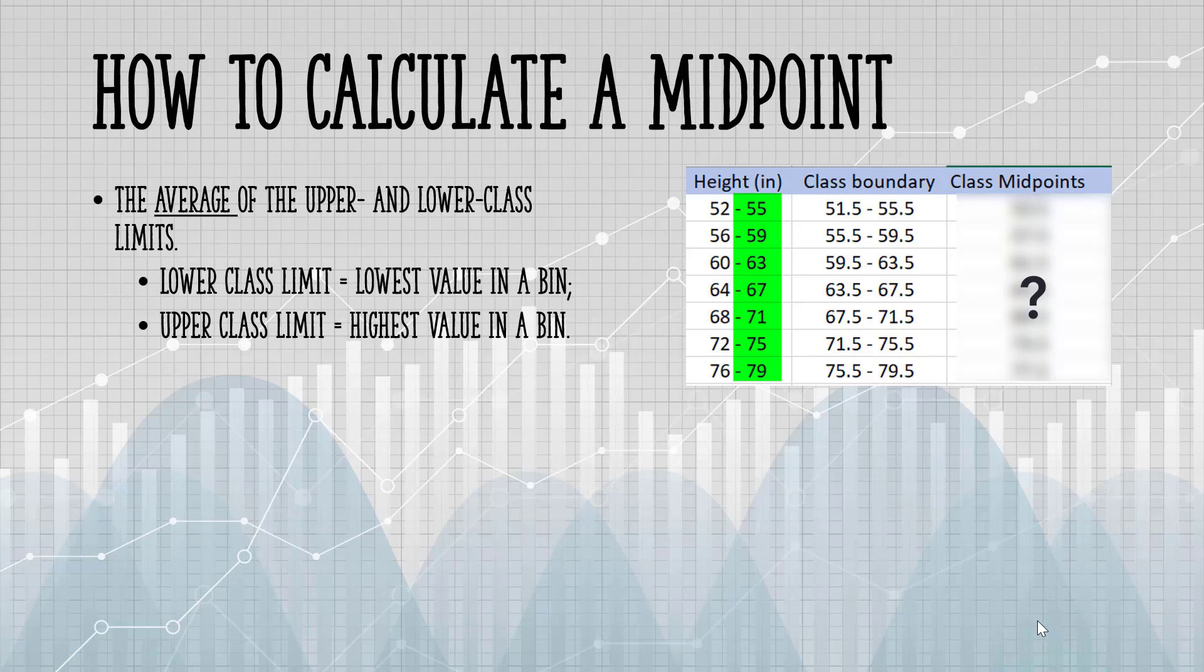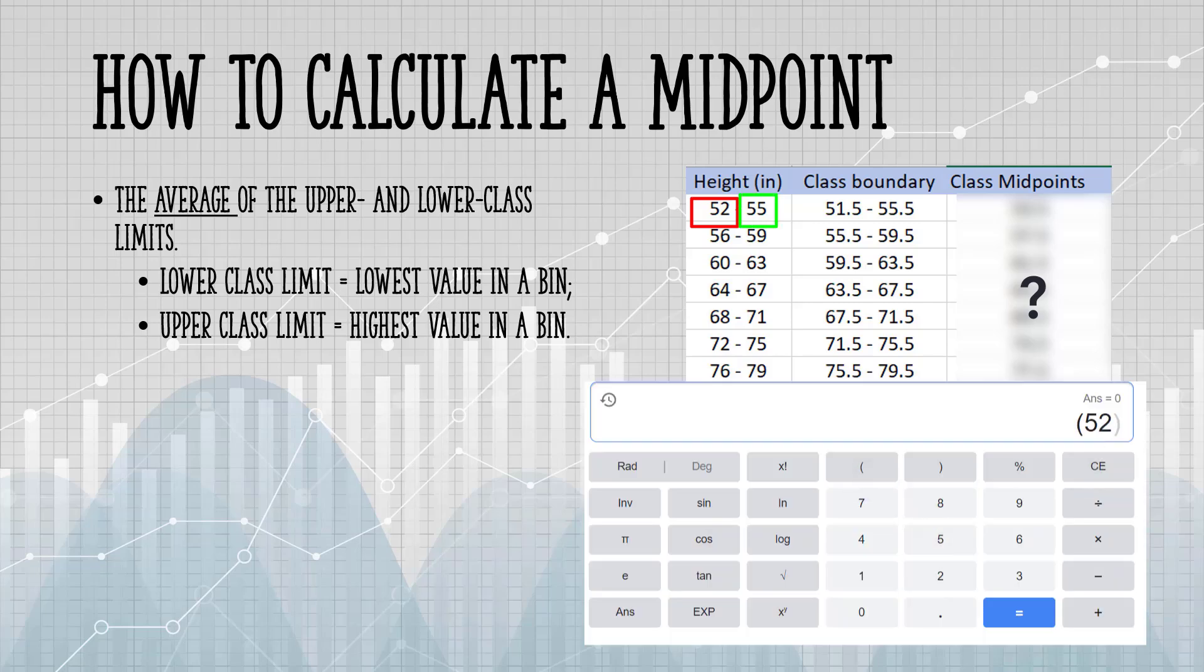So let's do an example. In the first bin, the lowest number is 52. The highest number is 55. So we're going to add those two together and divide by 2 to get the average. When I do that, I get 53.5 and that is my first midpoint.